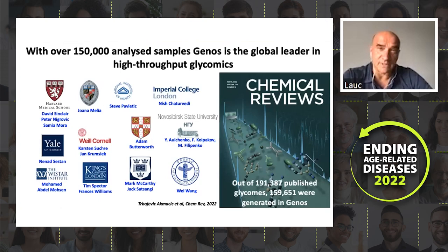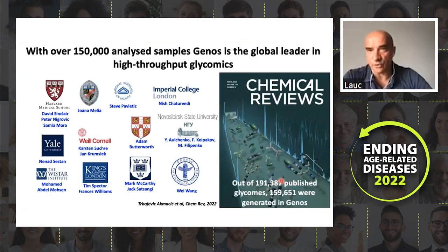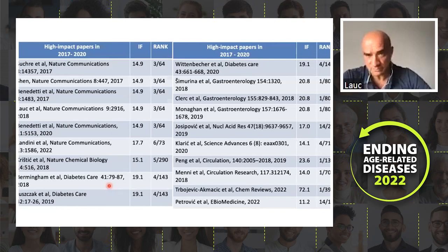We did this in collaboration with some of the best researchers around the world. Today we have generated approximately 80% of the global high-throughput glycomic output. There are over 190,000 published glycans reviewed in a recent Chemler review paper, and we generated nearly 160,000 of these. This enabled us to publish in high-quality journals including Cell Reviews, Gastroenterology, Circulation, and others.